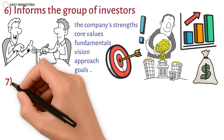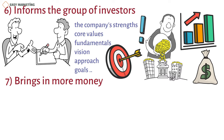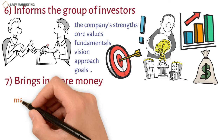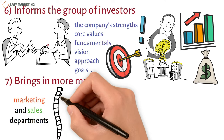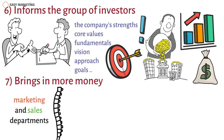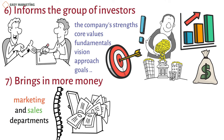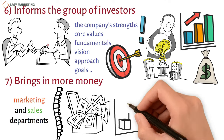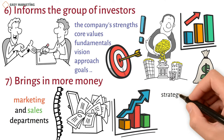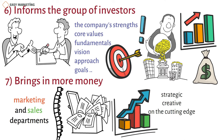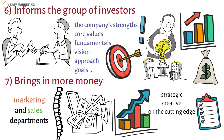Seven: brings in more money. The golden rule of business strategy says that the marketing and sales departments are each other's backbones. When they work together, the company's profits are at an all-time high, because sales and market share are higher than those of its competitors. This is because the marketing communication is strategic, creative, and on the cutting edge, and fits well with the organization's overall business goals.